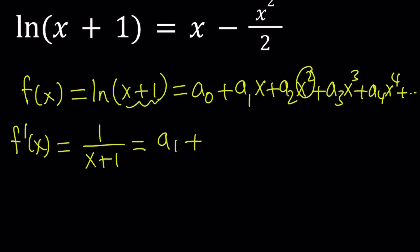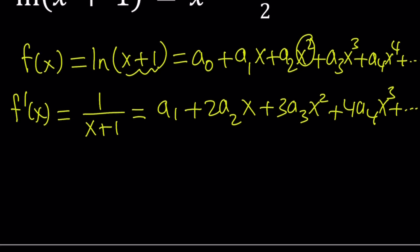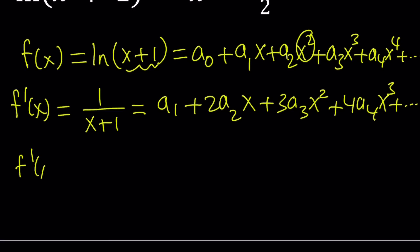And then the derivative of x² is 2x, but multiply that by a₂. You're going to get 2a₂ times x, or we could just say 2a₂x plus 3a₃x² plus 4a₄x³ and so on and so forth. This is going to go on forever. Let's just keep differentiating this function.